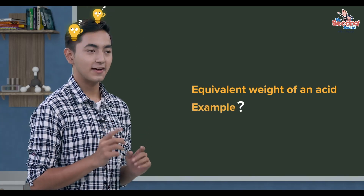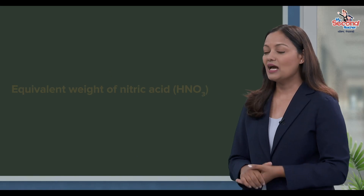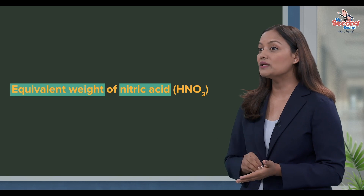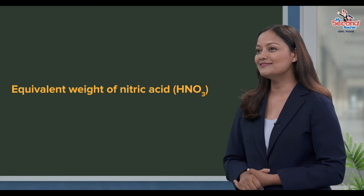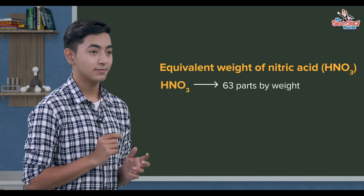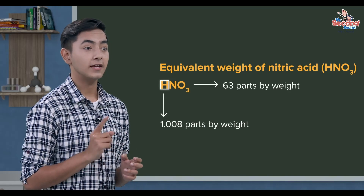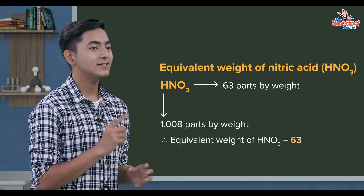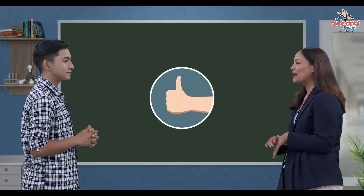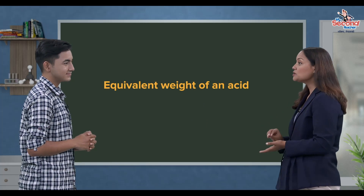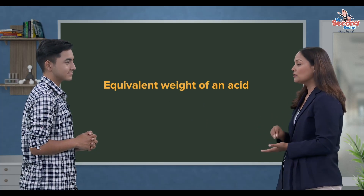Yota example maa try garaun. HNO3, thaak nitric acid ko equivalent weight kati uncha? 63 parts by weight nitric acid maa 1.008 parts by weight hydrogen baaya kaale, yasko equivalent weight 63 uncha. Aboa mahti milayo aurko tariqa baata kasari acid ko equivalent weight calculate koanne tyo sikhaun su.